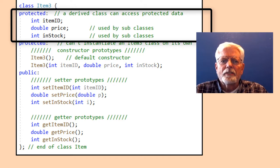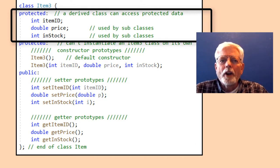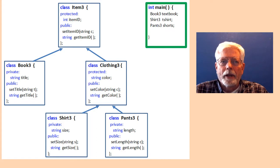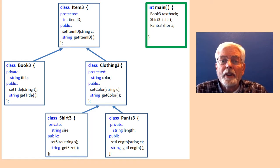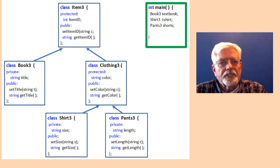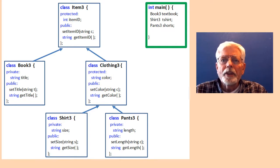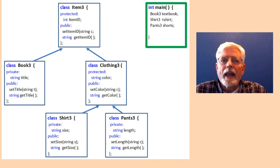An object of class item3 would not be very useful, and I didn't want an object instantiated, so I made the constructors protected. The book3 constructors, getters, and setters are public. Clothing3 is also derived from item3. In my mind, it is still too generic to sell a piece of clothing without knowing more about it. Therefore, I am giving the constructors protected access to prevent a clothing class from being instantiated from main, but still allow it to be used as a parent class for real pieces of clothing such as shirts and pants. The member data type, brand, and color are also protected, but the getters and setters are public so that they can be accessed by the main program.